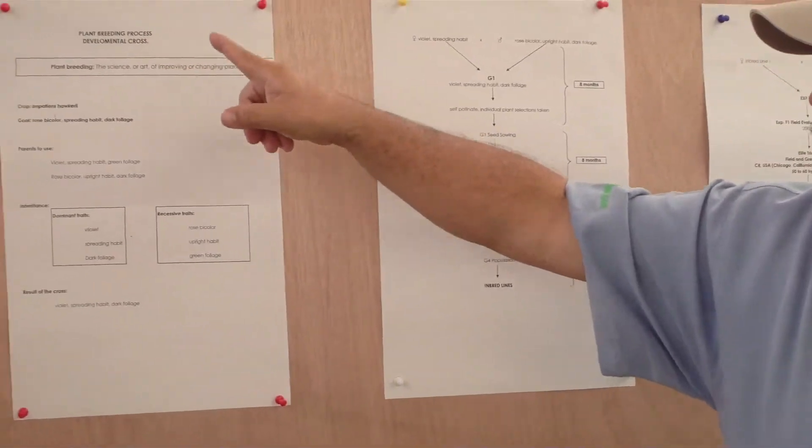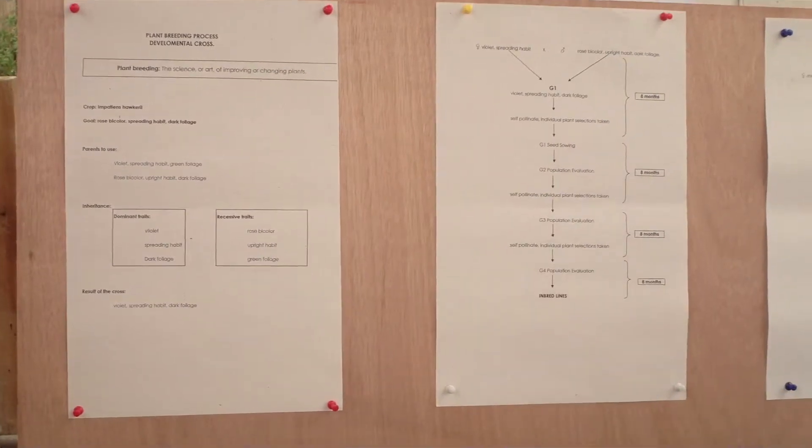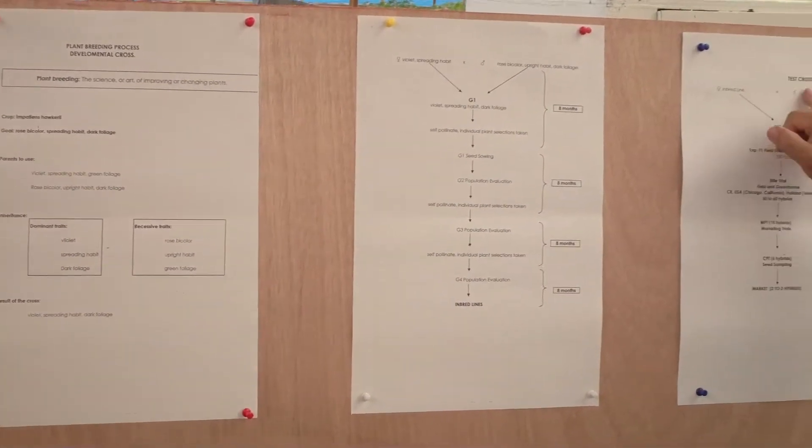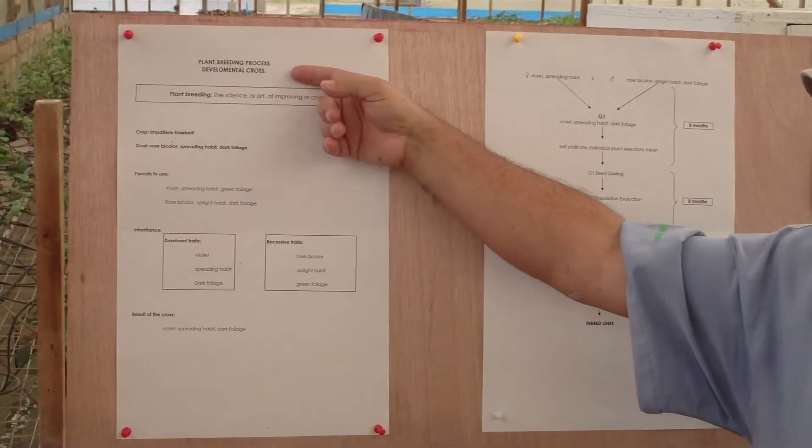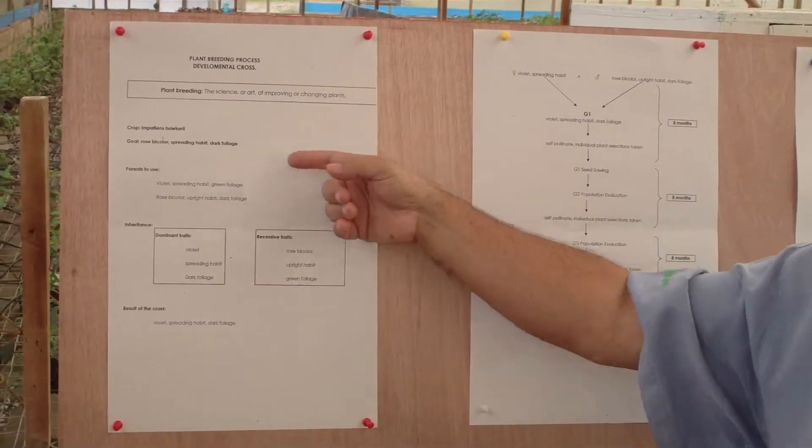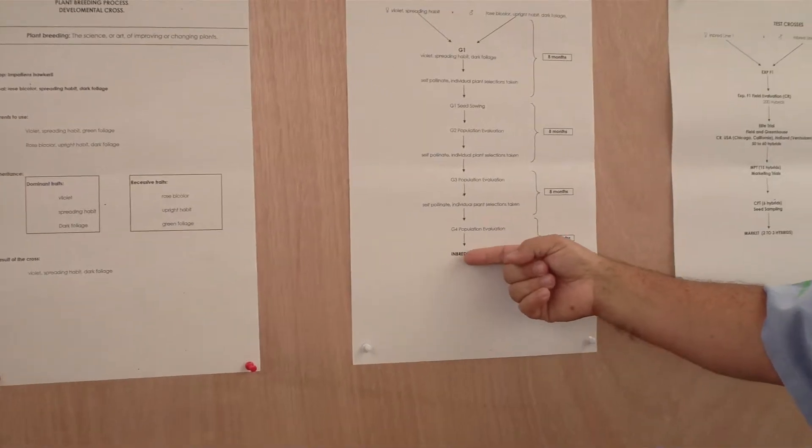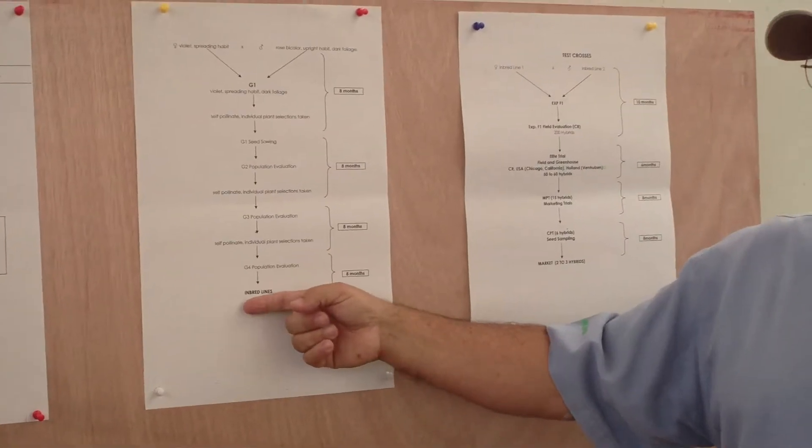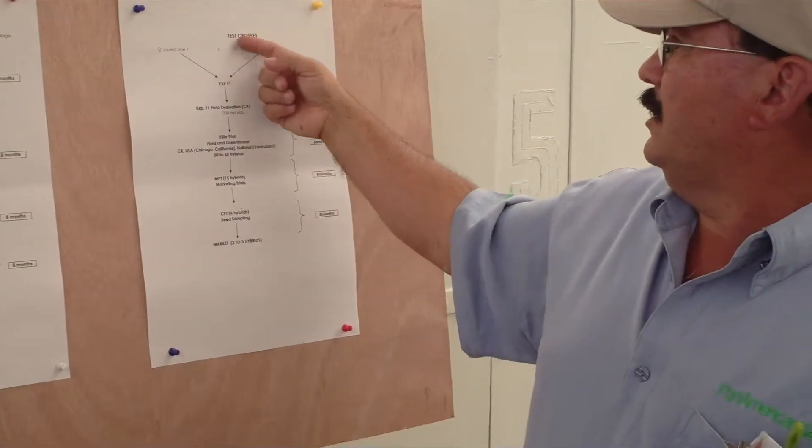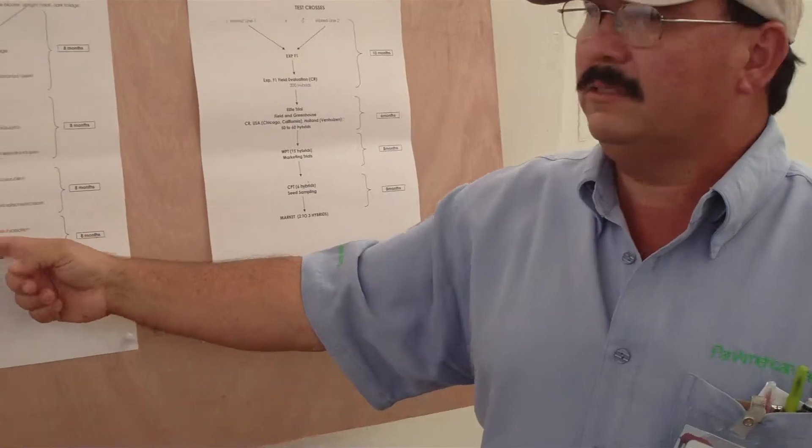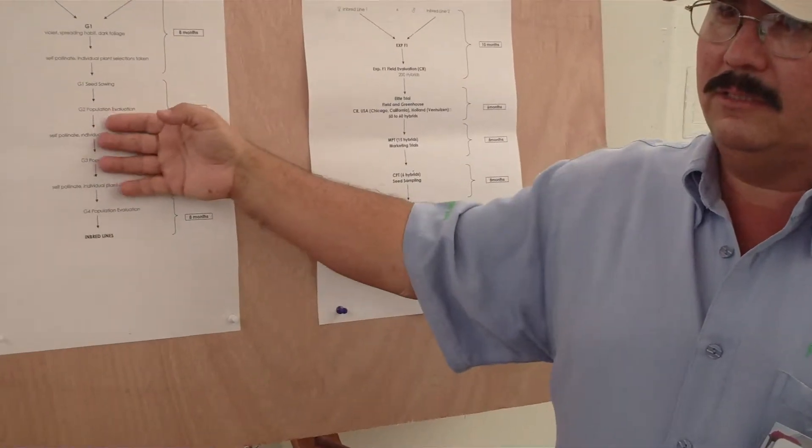And we're going to talk especially about a developmental cross, how to make some developmental cross, and how to make a test cross. Developmental cross is in order to develop an embryo line. Embryo line is that that is used in the production greenhouses as a female or as a male.